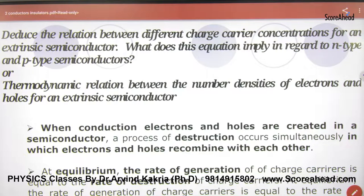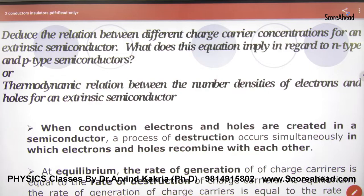Deduce the relation between different charge carrier concentrations for an extrinsic semiconductor. What does this equation imply in relation to n-type and p-type semiconductors? Or, the thermodynamic relation between number densities of electrons and holes for an extrinsic semiconductor.